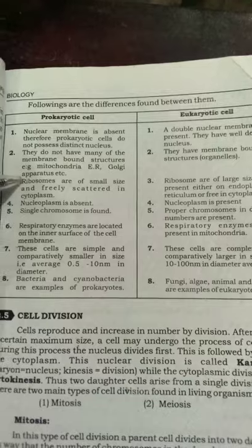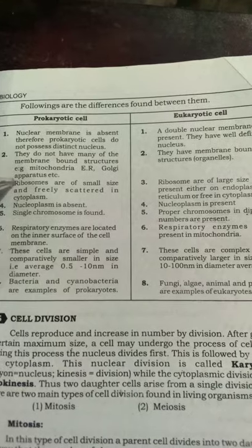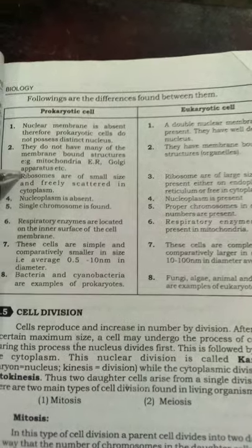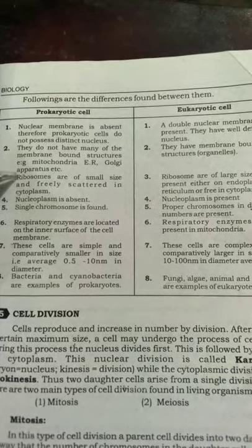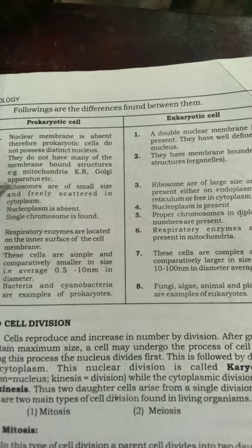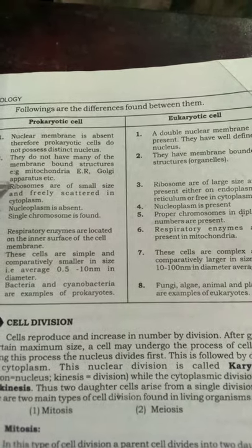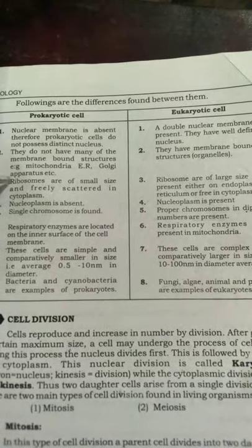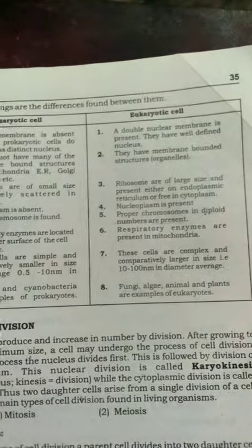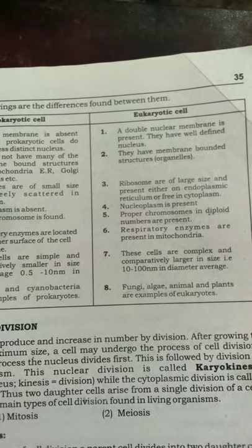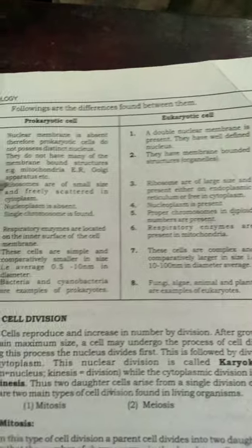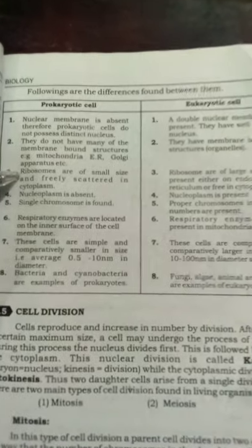Difference number two — membrane-bound structures: prokaryotic cells do not have membrane-bound organelles such as mitochondria, endoplasmic reticulum, or Golgi apparatus. In eukaryotic cells, membrane-bound organelles are present.